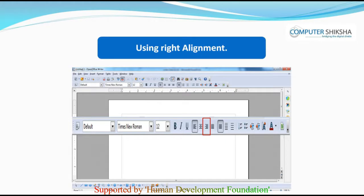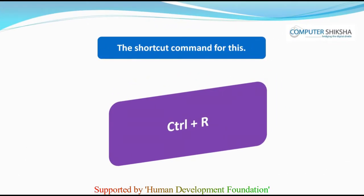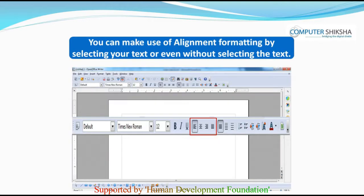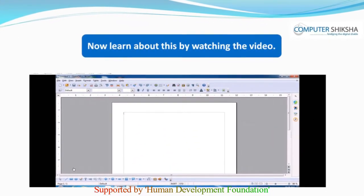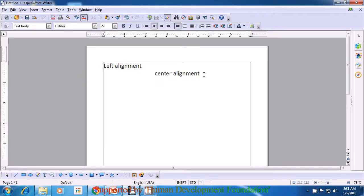Using right alignment, you can bring your text or paragraph to the right side of the page. When you select the right alignment option, your typed text will begin appearing on the right, or whatever you have typed will come to the right side from the left side. The shortcut command for right alignment is Ctrl+R. You can make use of alignment formatting by selecting your text or even without selecting the text. Now, learn about this by watching the video.